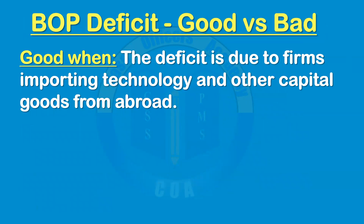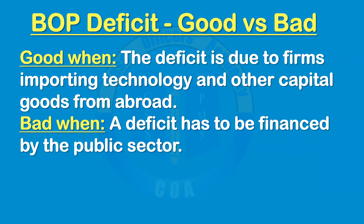Another situation where a current account deficit can be good is when the deficit is due to firms importing technology and capital goods from abroad. For example, if a developing country is importing high-tech cutting-edge technology, in the short term foreign exchange drains out, but in the long run the country's productivity increases, it becomes more competitive in international markets, and it ultimately starts exporting more goods, resulting in an inflow of foreign exchange.